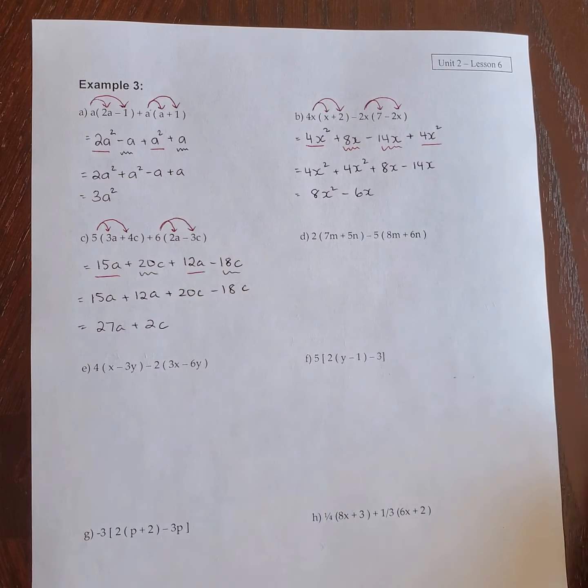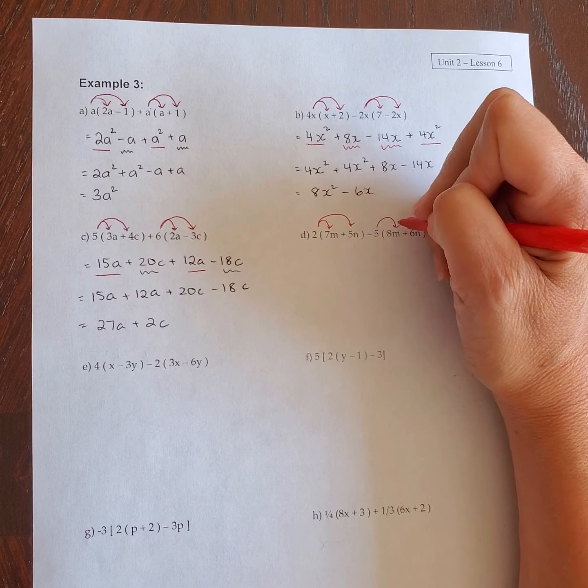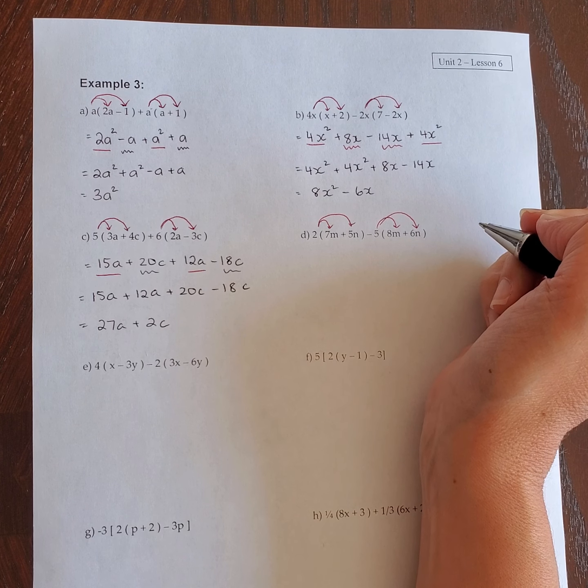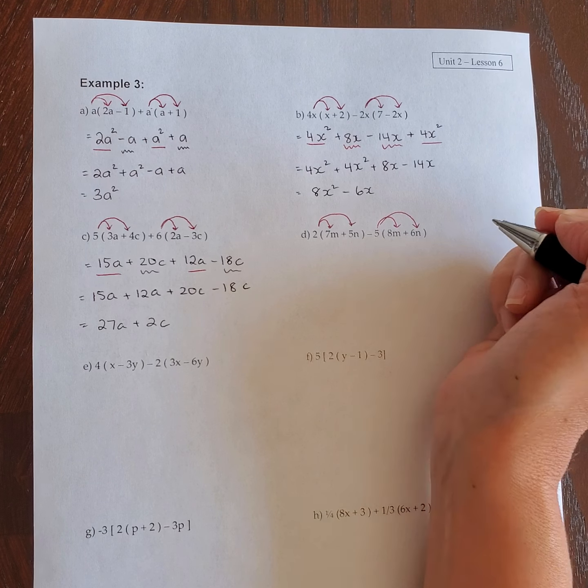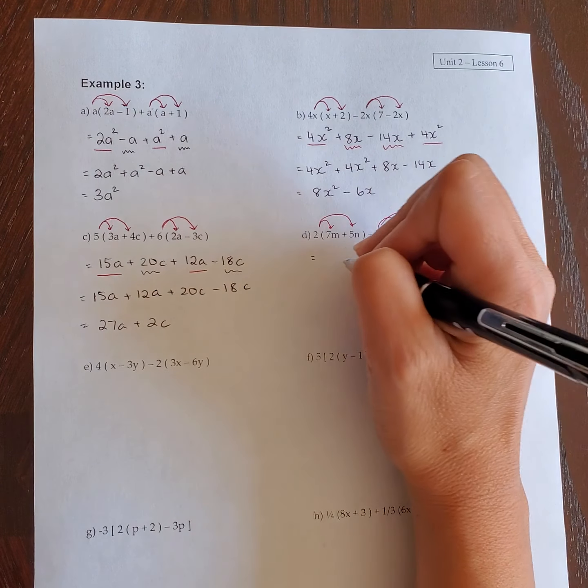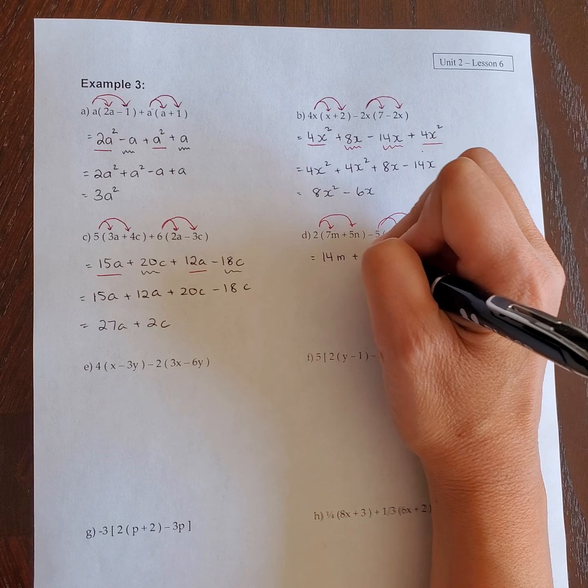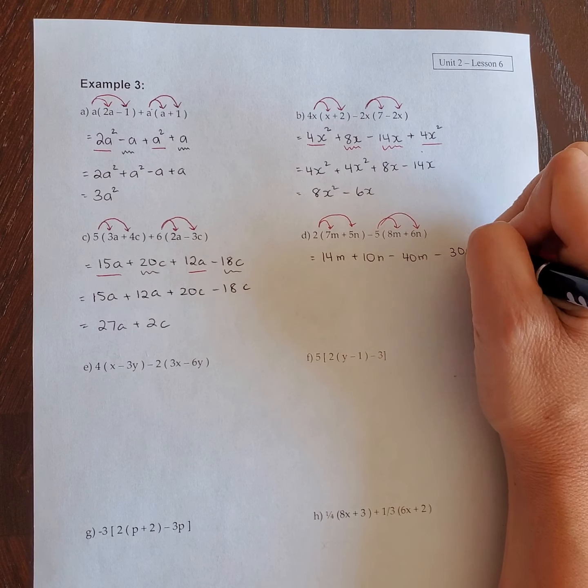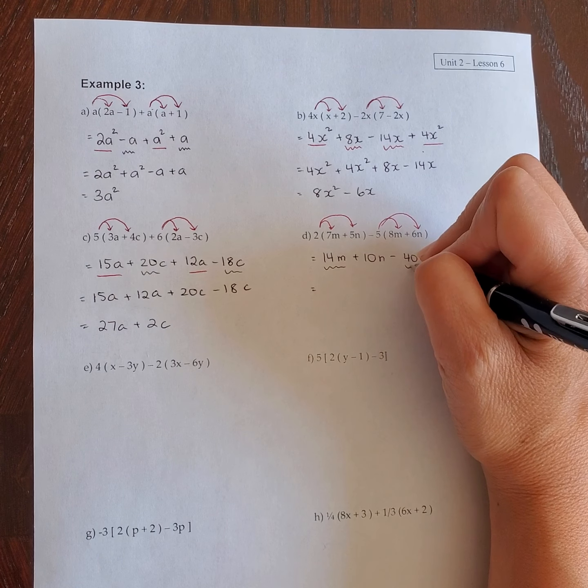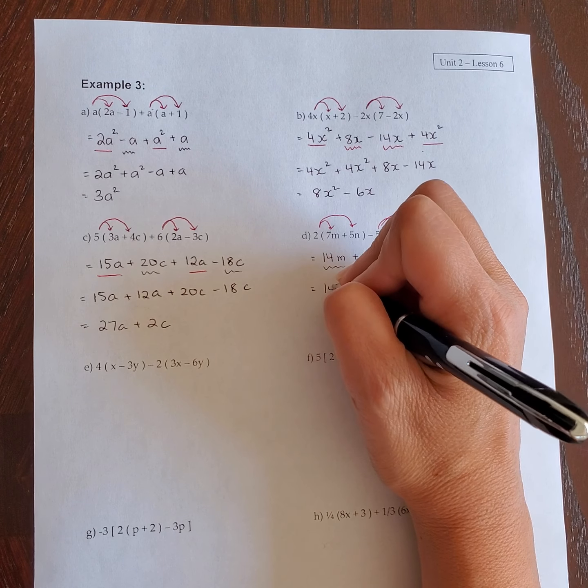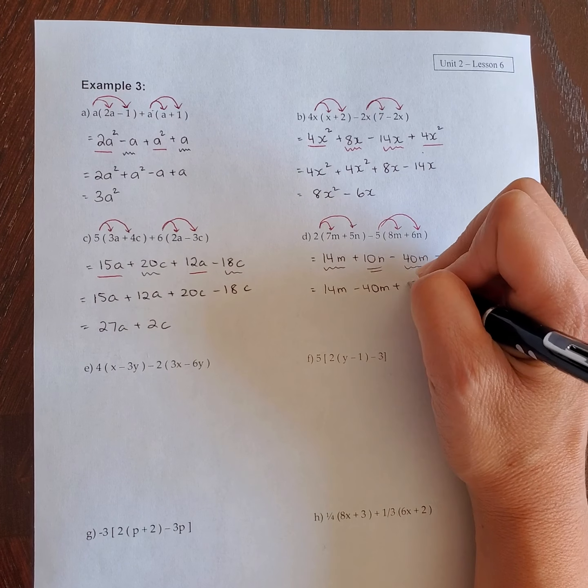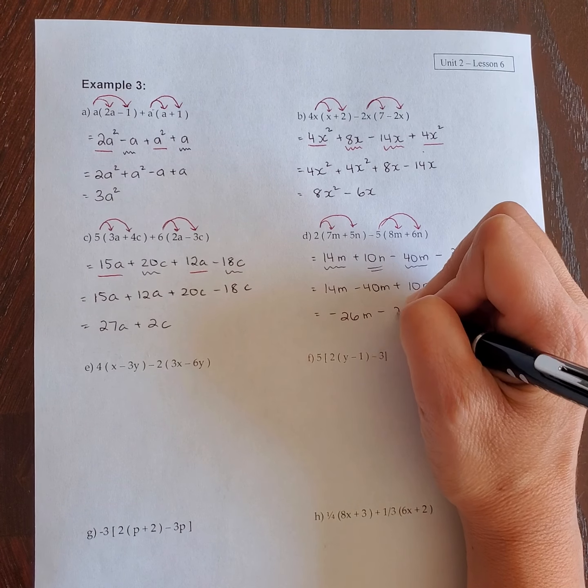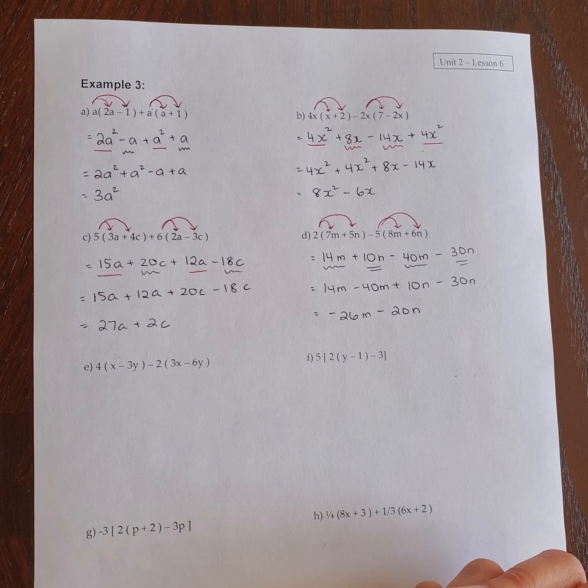So the 2 and the negative 5 goes here. I'm going to start going a little faster. If you want to try them on your own, what you can do is pause the video right now, do the rest on your own, and then you can press play and just double check that you are doing them correctly. So I'm just going to do them without talking so much. Your final answer should be negative 26m take away 20n.